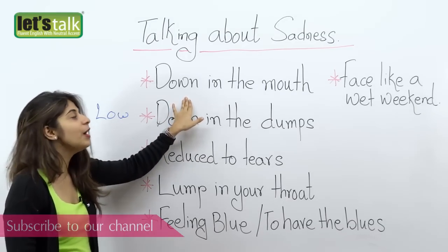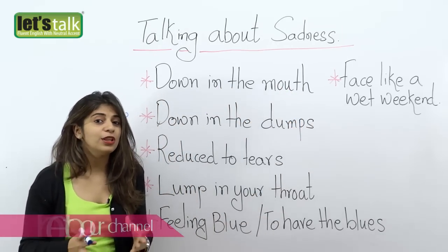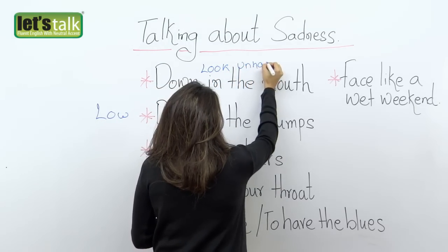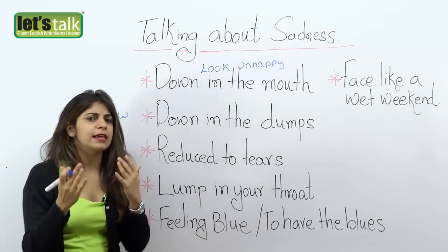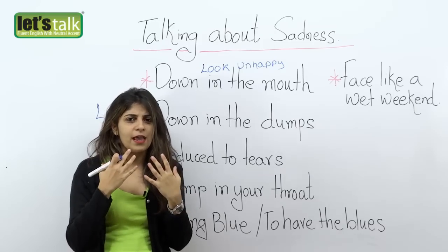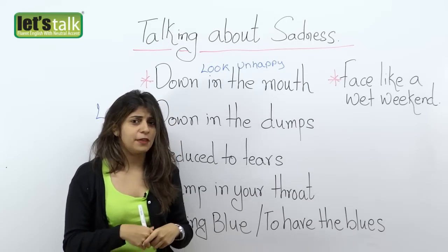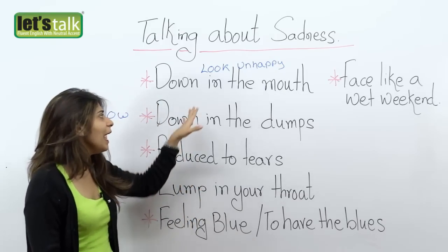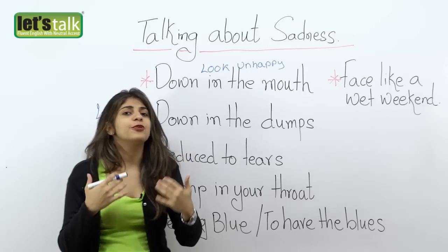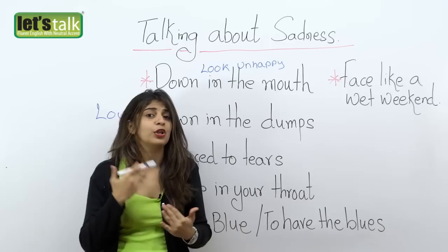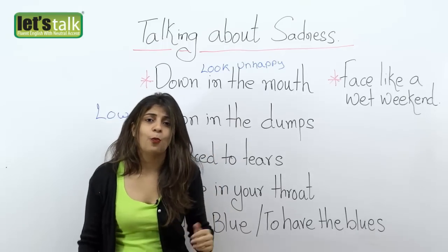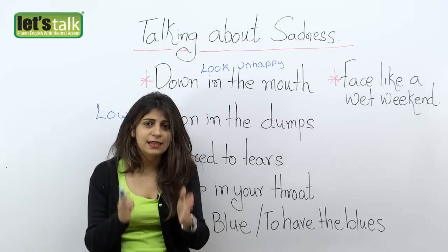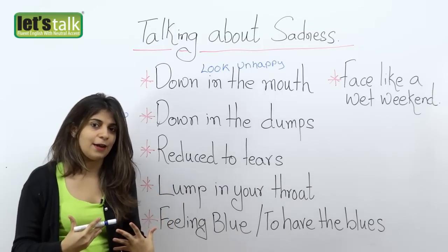The first expression is 'down in the mouth.' Down in the mouth means to look unhappy. This expression is related to the way the corners of your mouth go down — like a puppy face. That's when you look sad, and you can use this expression. For example, if you see someone who seems a little sad, you can say: 'Hey, you look down in the mouth — what's the problem?' Or: 'She seems to be down in the mouth, maybe she failed her examinations.' So this describes the appearance — you appear to be sad or unhappy.